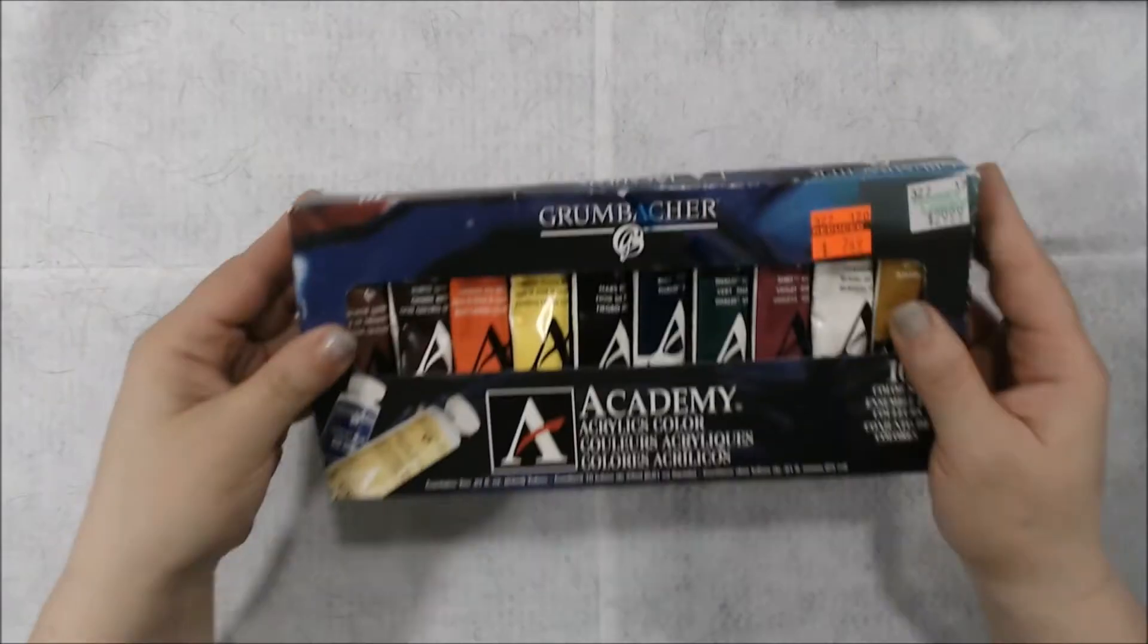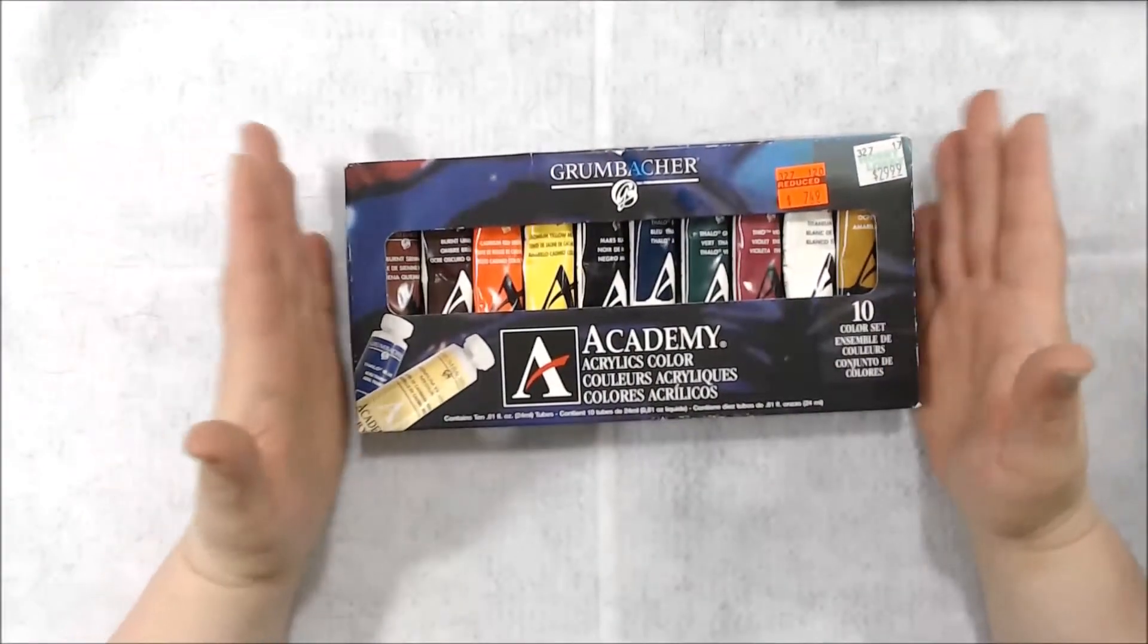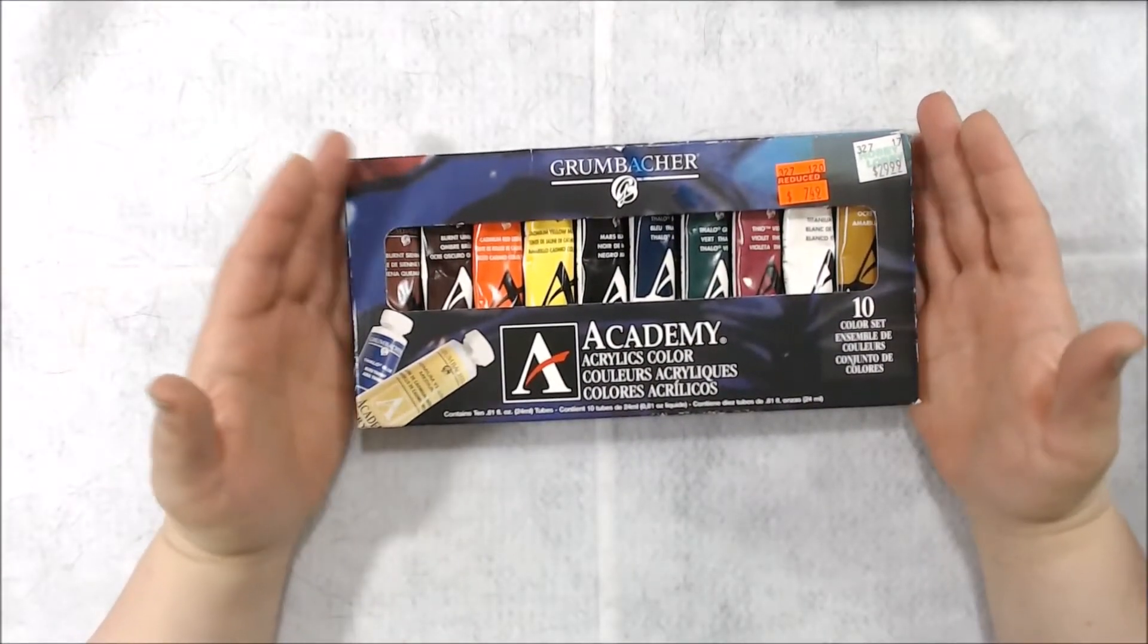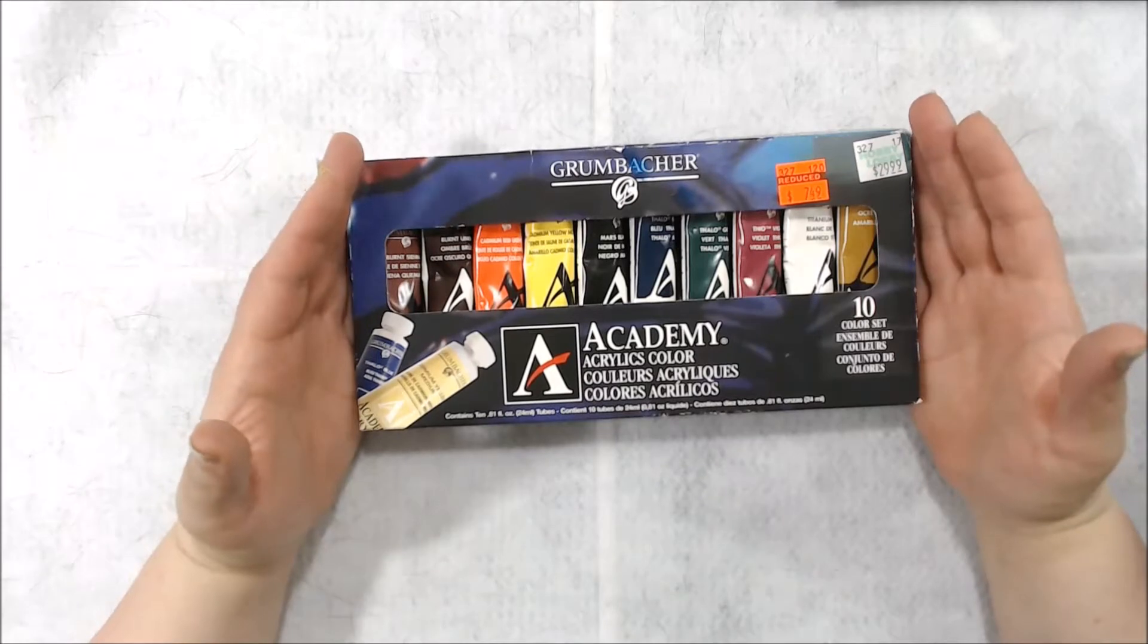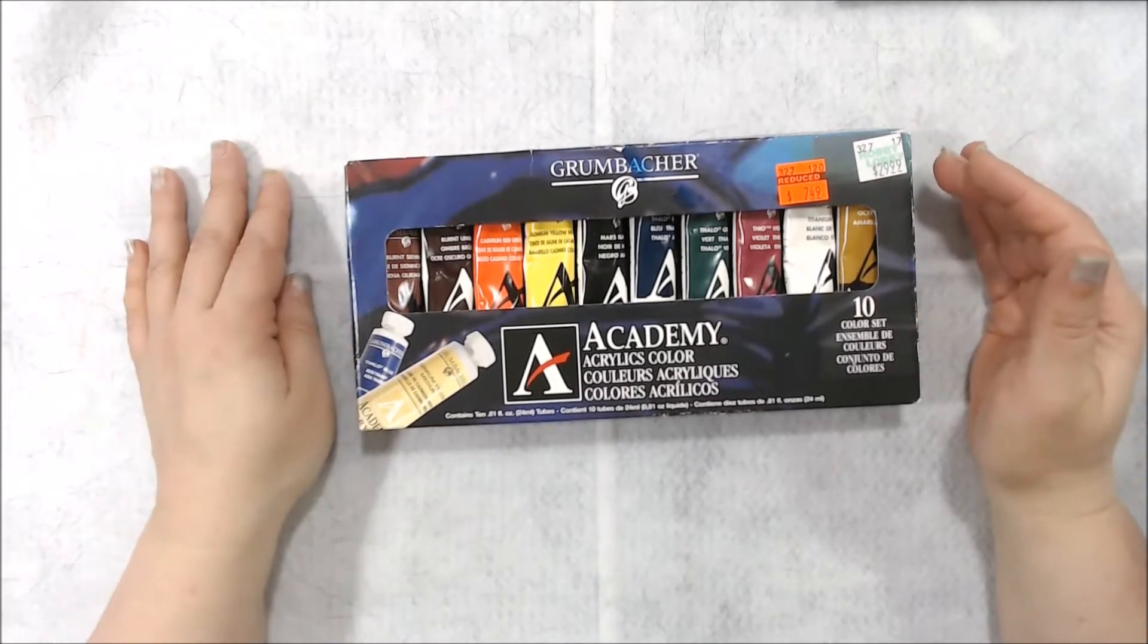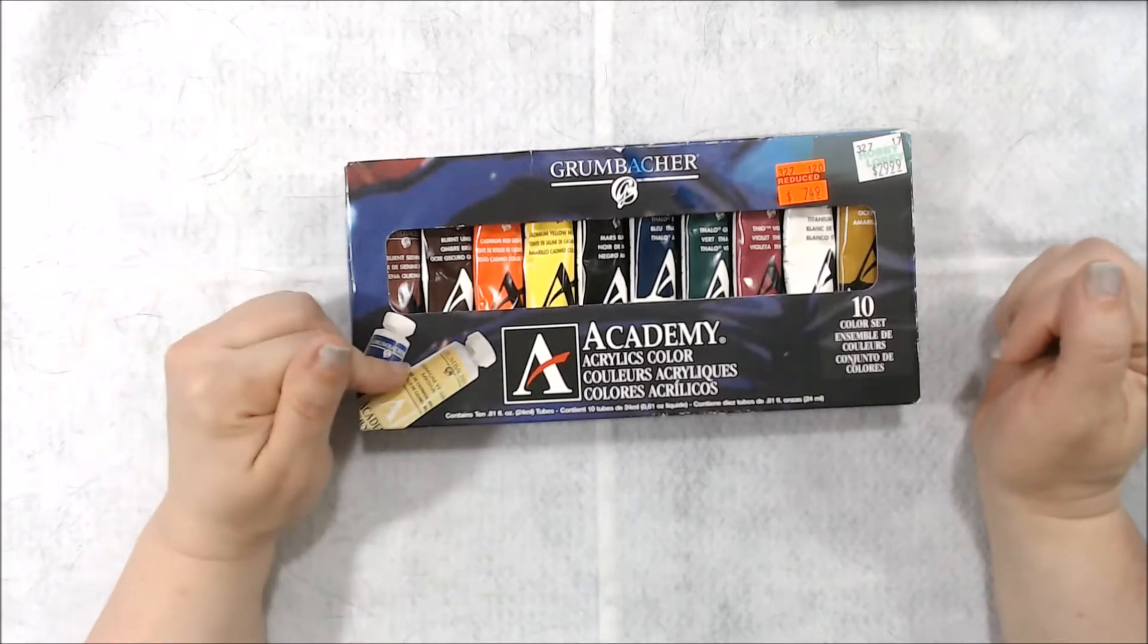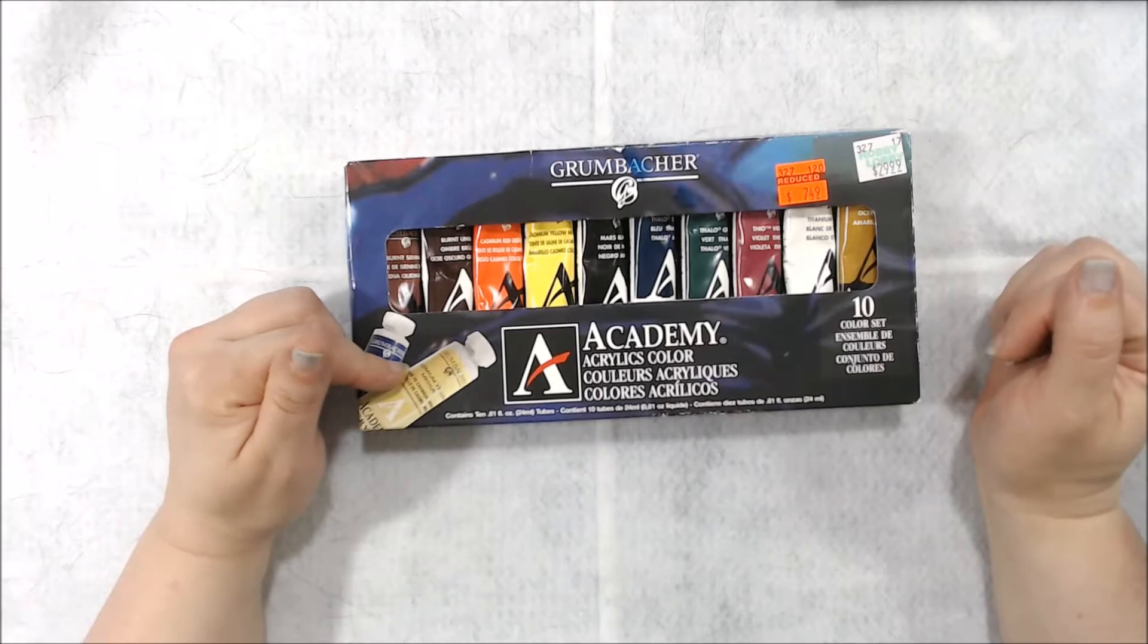Also in the Gumbacher I found this acrylic 10-piece set which was normally $29.99. It's now $7.49. There's 10 colors here and it's 24 milliliter tubes.